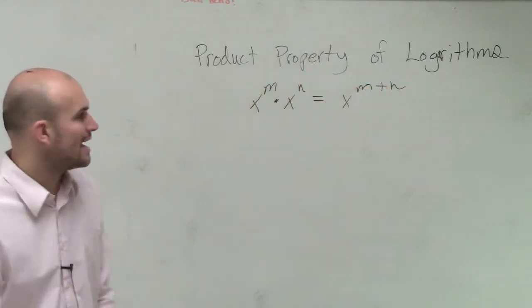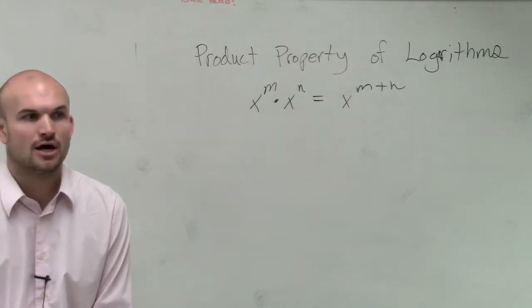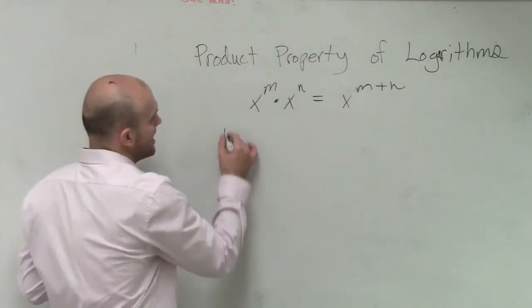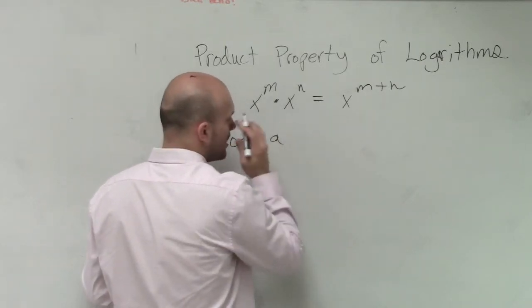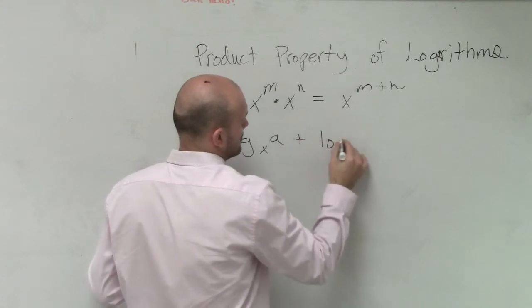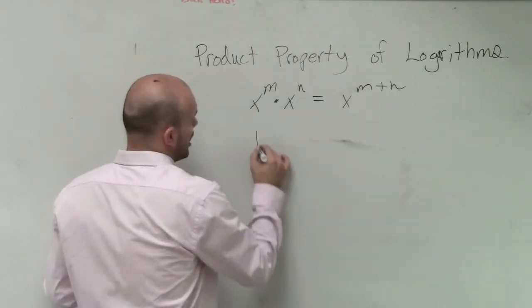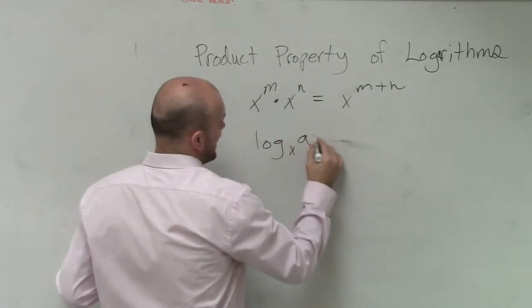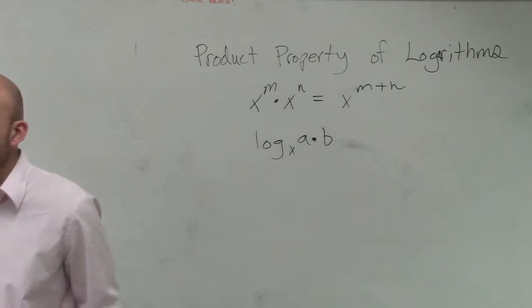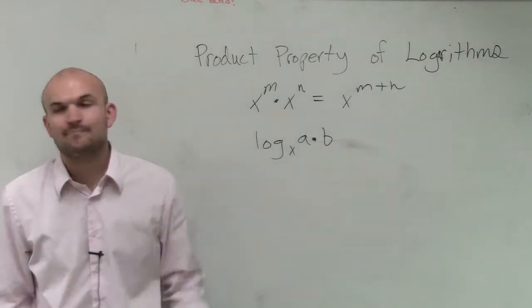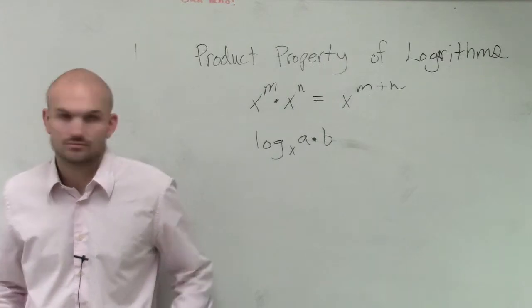What about if I have, how can I rewrite then the product property of two logarithms? So let's say I have log base x of a plus, let me just do it like this. Log base x of a times b. So if I have the same logarithm of base x, and I'm multiplying two numbers or two expressions,